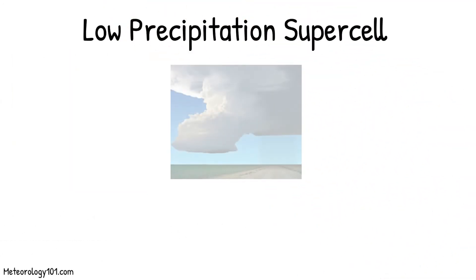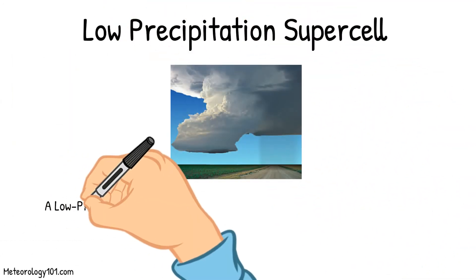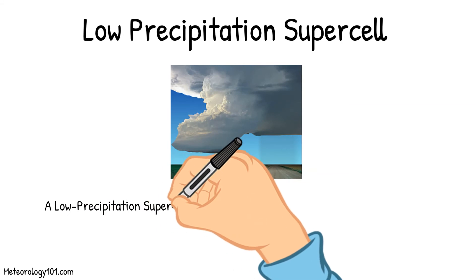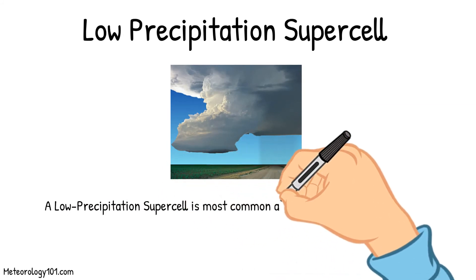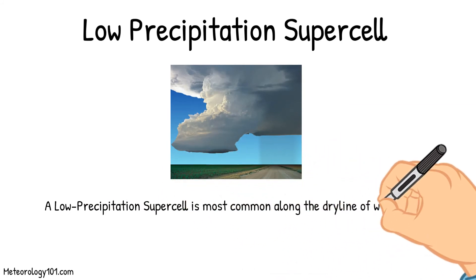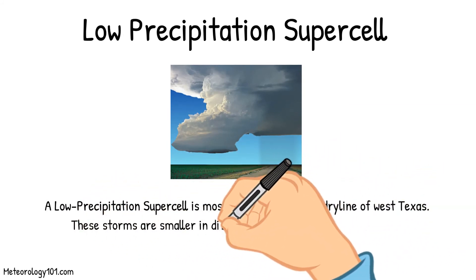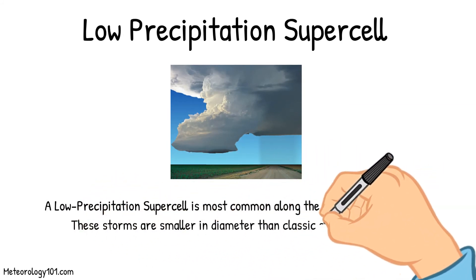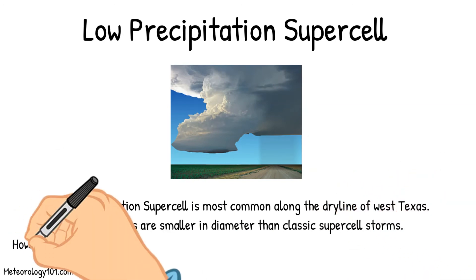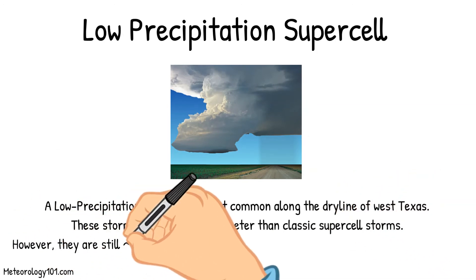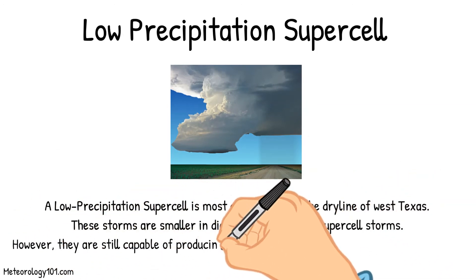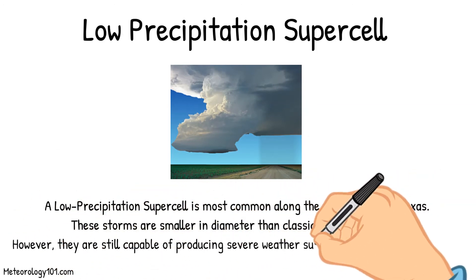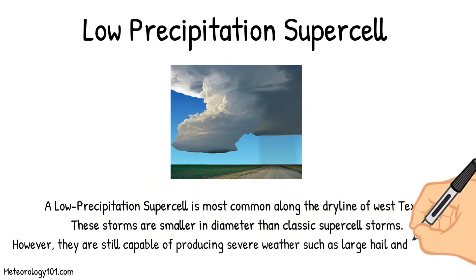A low-precipitation supercell is most common along the dryline of West Texas. These storms are smaller in diameter than classic supercell storms; however, they are still capable of producing severe weather, such as large hail and tornadoes.